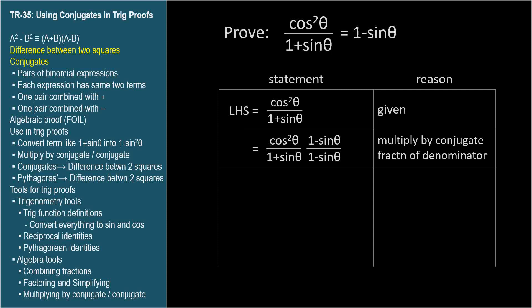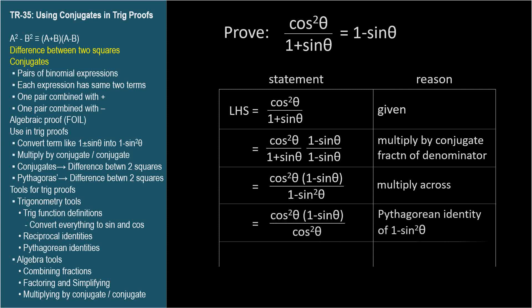Let's look at the denominator. When we multiply conjugates, we get the difference between the squares of the terms. So, the denominator becomes 1 minus sine squared theta. Now, the denominator is in a form we can use with the Pythagorean identity. 1 minus sine squared theta equals cosine squared theta, and we can cancel cosine squared theta from the numerator and denominator to get the right-hand side.